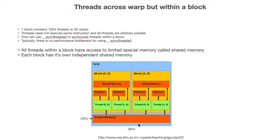All threads within a block have access to a limited special memory called shared memory. Each block has its own shared memory, as shown in this figure. There are multiple blocks, each with its own shared memory, which is common to all threads within that block.